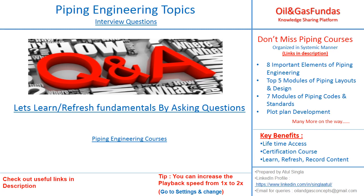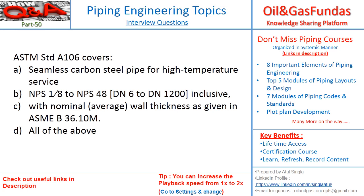Let's continue. Next question: ASTM A106 covers seamless carbon steel pipe for high temperature service — the size range is 1/8 to 48 inch, with nominal average wall thickness as given in ASME 36.10. Is this true, or all of the above?